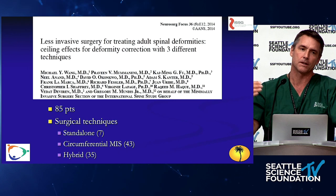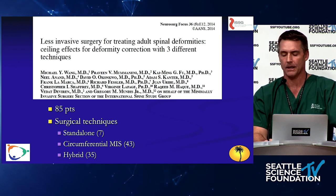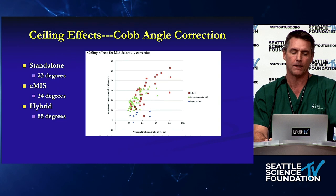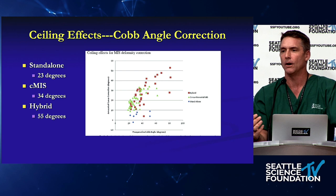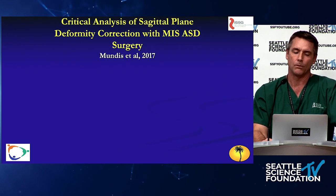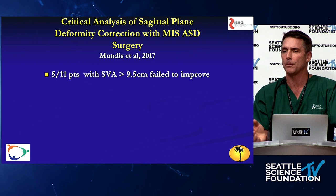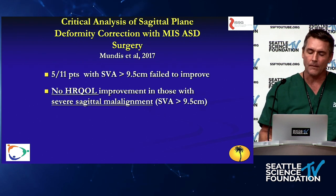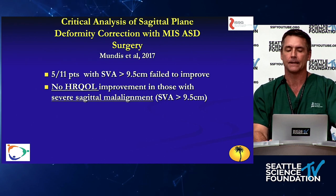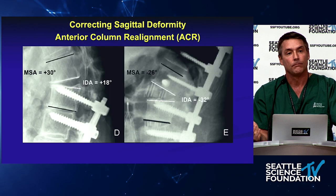There are certainly limitations, and we looked at the ceiling effect early on — back in 2014, in the first decade of MIS application — looking at standalone, circumferential MIS, and hybrid techniques for correcting deformity. There was indeed a ceiling effect: we were really opening the posterior spine in addition to interbody techniques to achieve correction in more significant deformities. With respect to the sagittal plane, similar questions arose. In a 2017 paper based on patients treated in the first part of that decade, we were really failing to achieve corrections in patient-reported outcome measures for those with more profound sagittal vertical axis deformities.